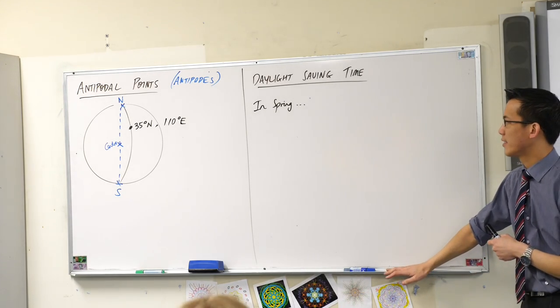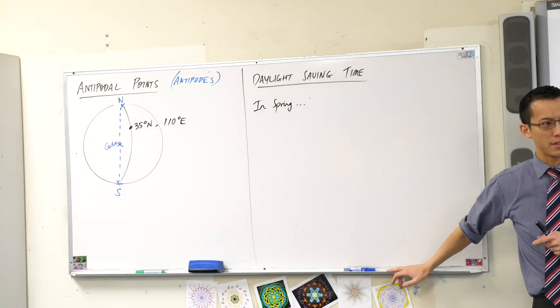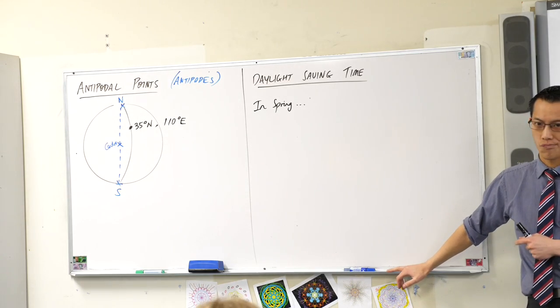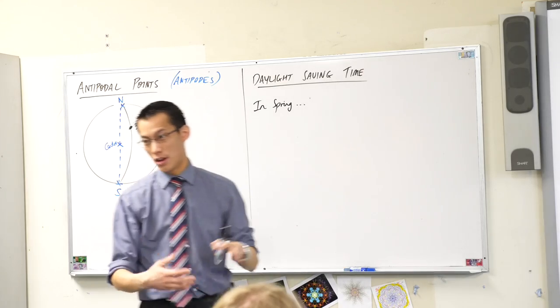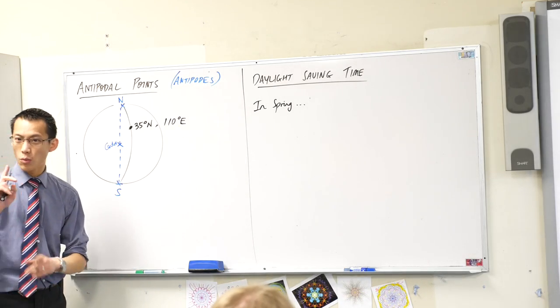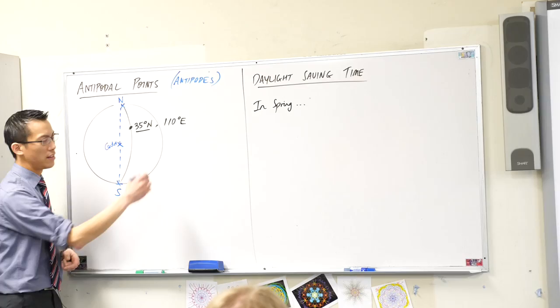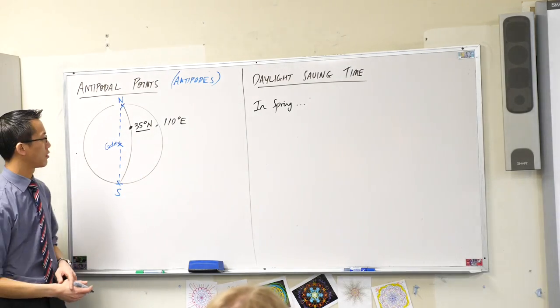How will you go about working the antipodal point for this? Have a think about it. So you want this on the opposite side of the Earth. We'll take it one step at a time. Let's think about the latitude first and then we'll get onto the longitude.